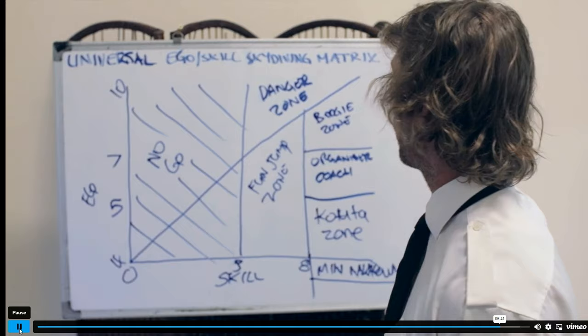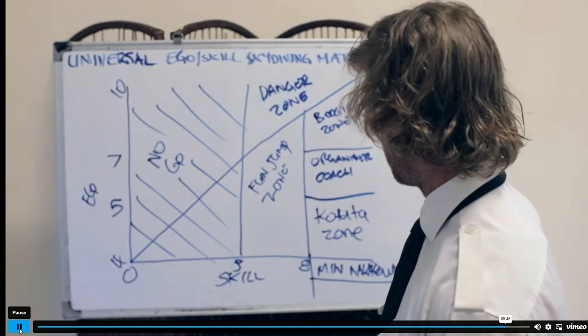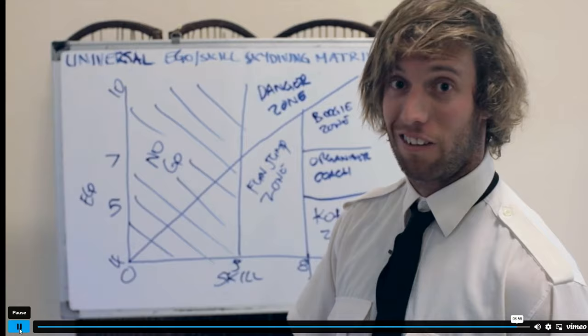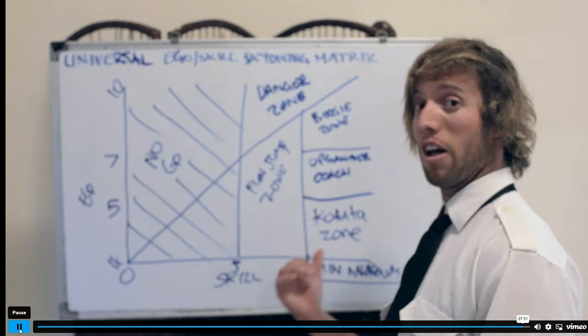So that's the universal ego skills skydiving matrix. I hope it helps you down the drop zone. Remember: stay out of the danger zone, get the hell out of the no-go zone — if you find yourself in there, get down the tunnel and learn. And when you get to the cooter zone, have a good time.